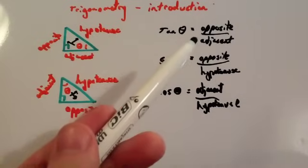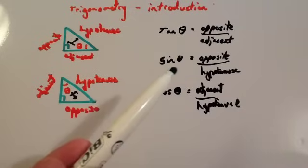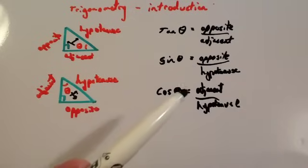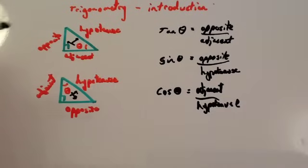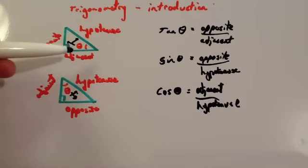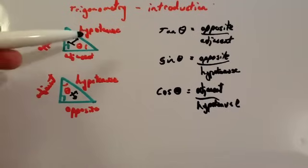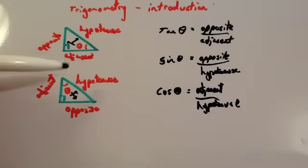Tan theta is opposite divided by adjacent. Sin theta is opposite divided by hypotenuse and cos theta is the adjacent divided by hypotenuse. So, if you've got a triangle and you divide the opposite by the adjacent, you will get tan theta. If you do the opposite divided by the hypotenuse, you will get sin theta. And if you do the adjacent divided by the hypotenuse, you will get cos theta.